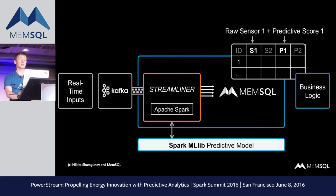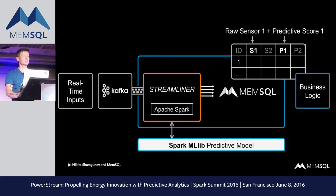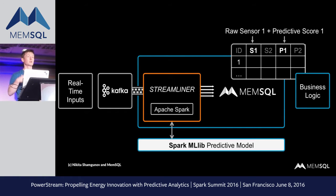Once data is in Spark and MLlib, you produce predictive models, and then you can push those models into Streamliner to start scoring data that is moving into the system in real time. We do it time and again. We'll demonstrate it with PowerStream, but a good number of our customers do the same thing: collecting IoT data, scoring it, pushing that data into MemSQL, attaching BI tools, building applications, building alerts, and building all sorts of sophisticated logic to data flowing into the system in real time.